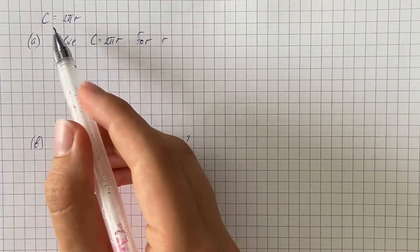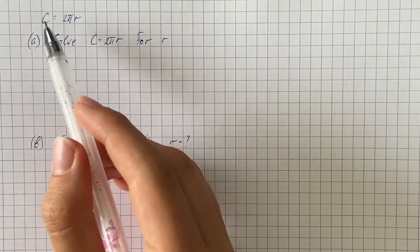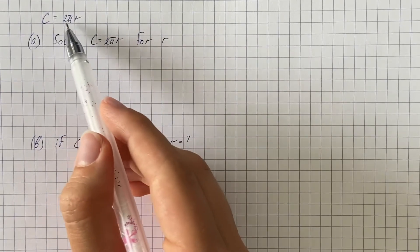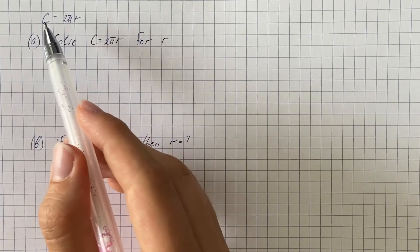The given formula is c equals 2 pi r, where c is circumference of a circle, r is radius of a circle, and pi is a constant ratio of circumference to diameter.